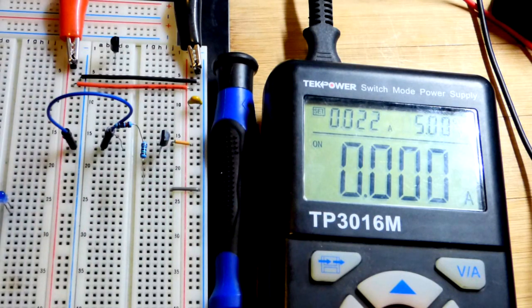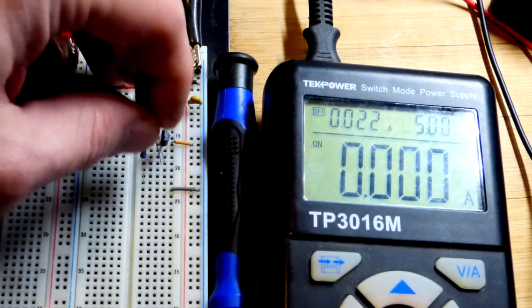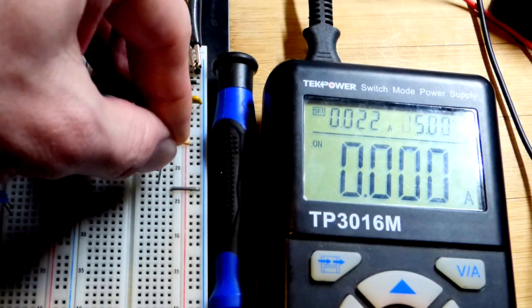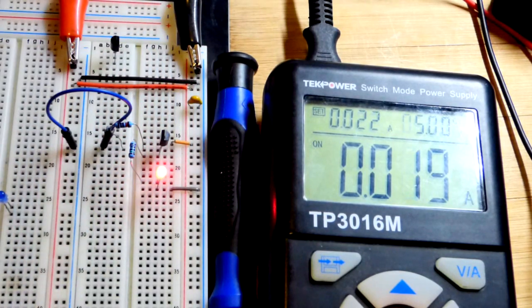If I remove the LED, you can see we got less than 1 milliamp of current. Make sure the LED is in the right way so that it's in the direction that it conducts.